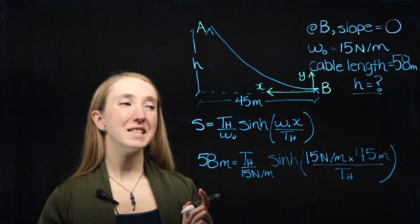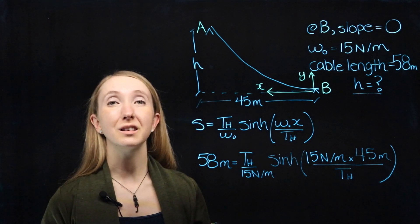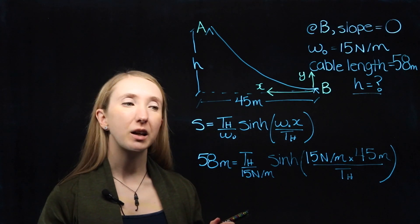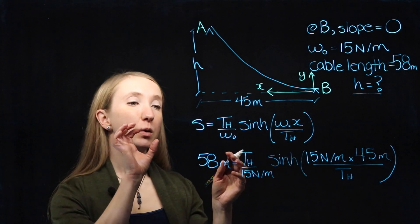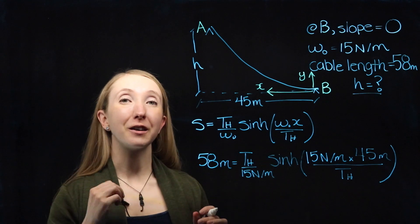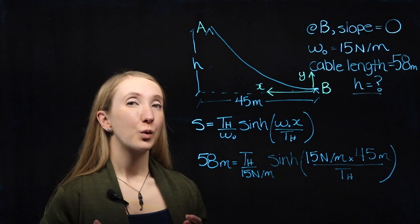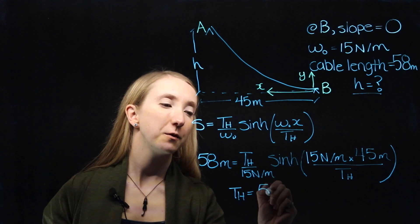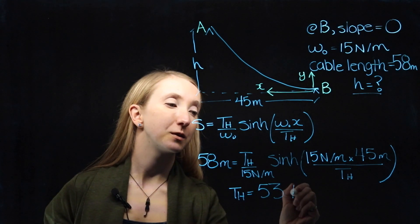To find TH, we use a trial and error approach, using different values for TH until we find one that makes it so that both sides of the equation are equal to each other. When we do that, we find that TH is equal to 534 newtons.